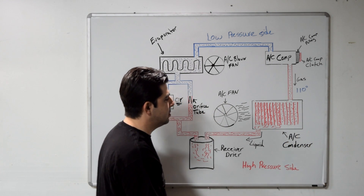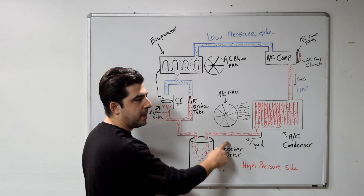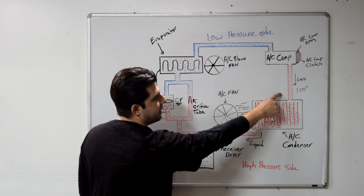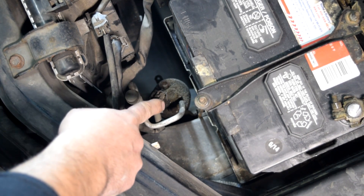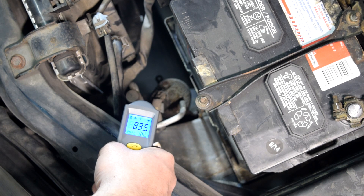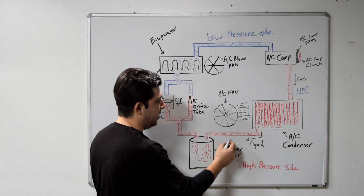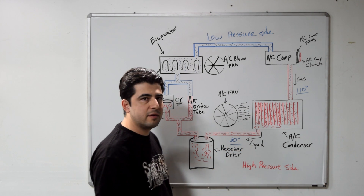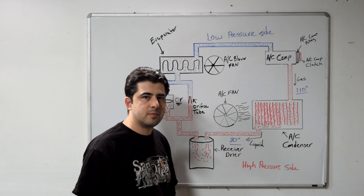We got about 110°F on the line going to the condenser. Next, measure the temperature of the line coming out of the AC condenser — it should be about 50 degrees cooler than the line going in. Here's our receiver dryer, and the AC line coming out of the condenser reads about 81 to 82 degrees Fahrenheit — only about 25 to 30 degrees cooler. That's somewhat expected since this is probably the original AC condenser on this 1995 Toyota Camry.